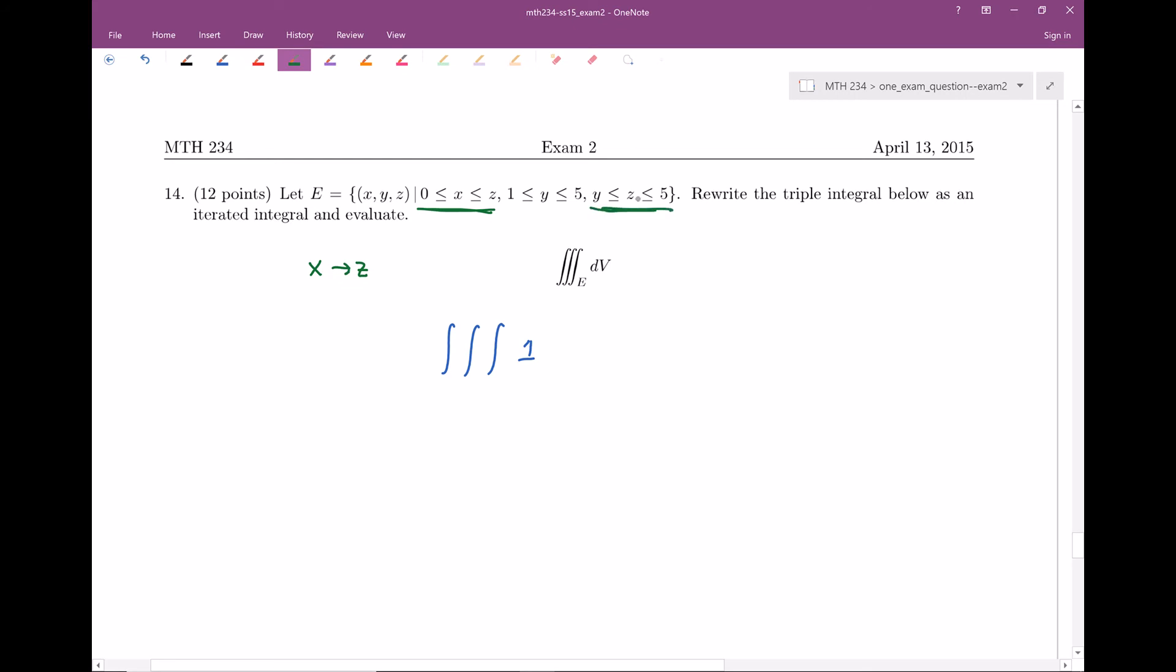Z has bounds that depend on Y, so Z has to come before Y. So it looks like it has to be X, then Z, then Y. Let's check Y's bounds just to make sure. Y ranges from one to five - excellent. So these should be constants.